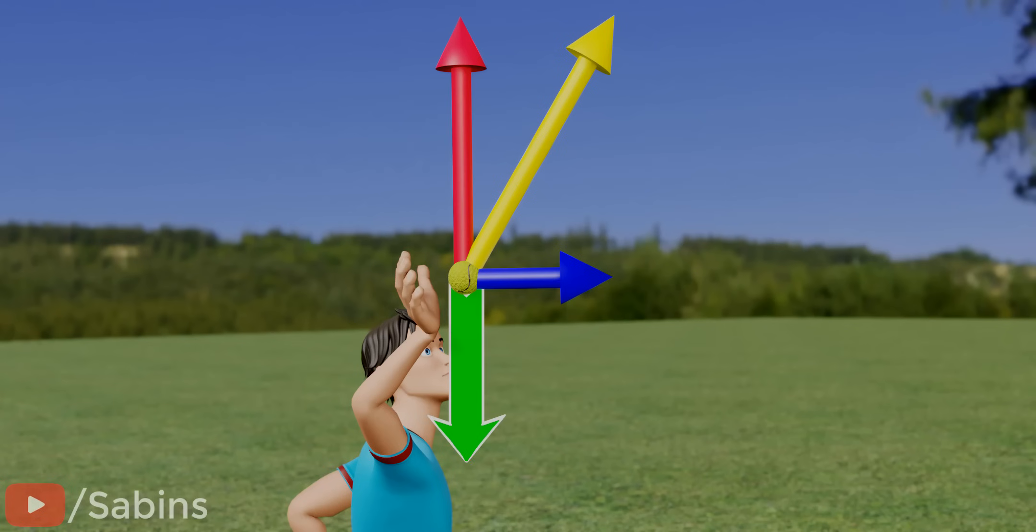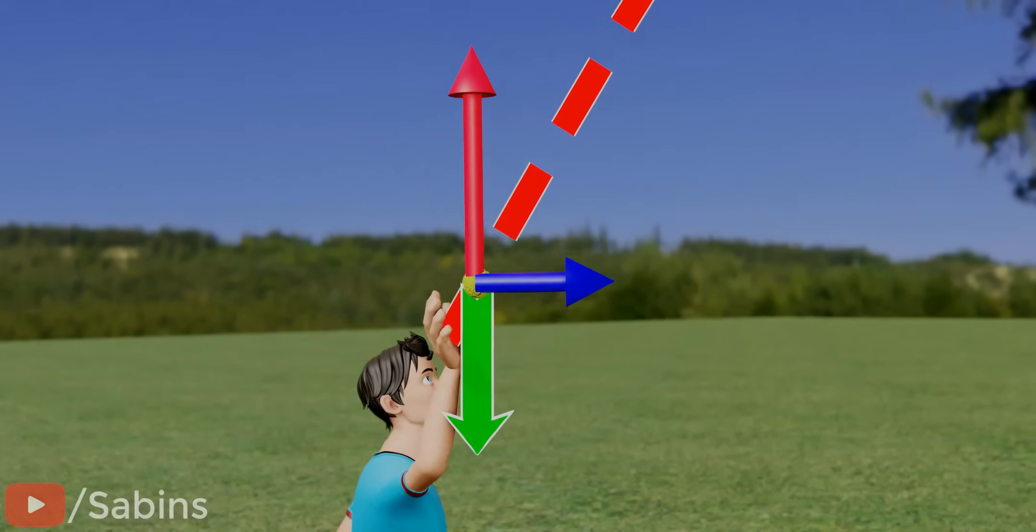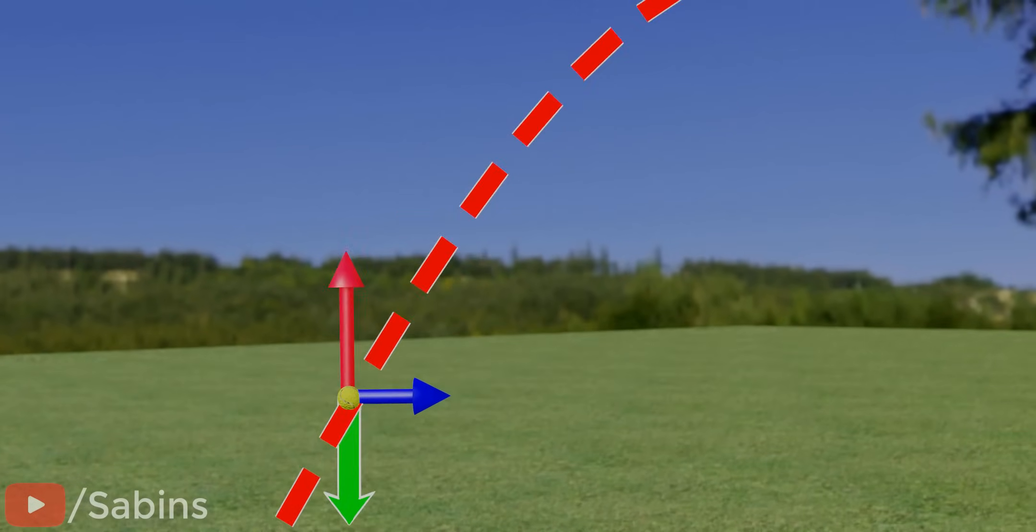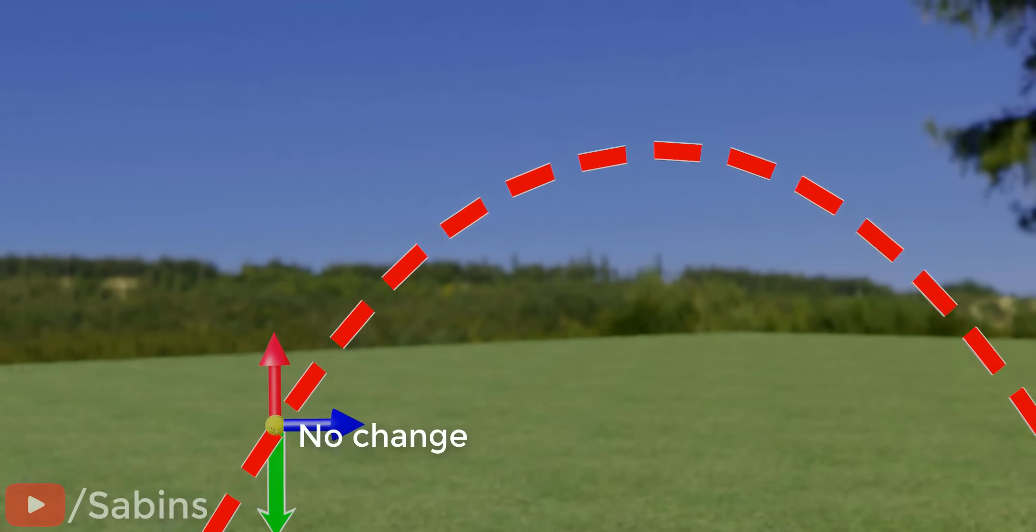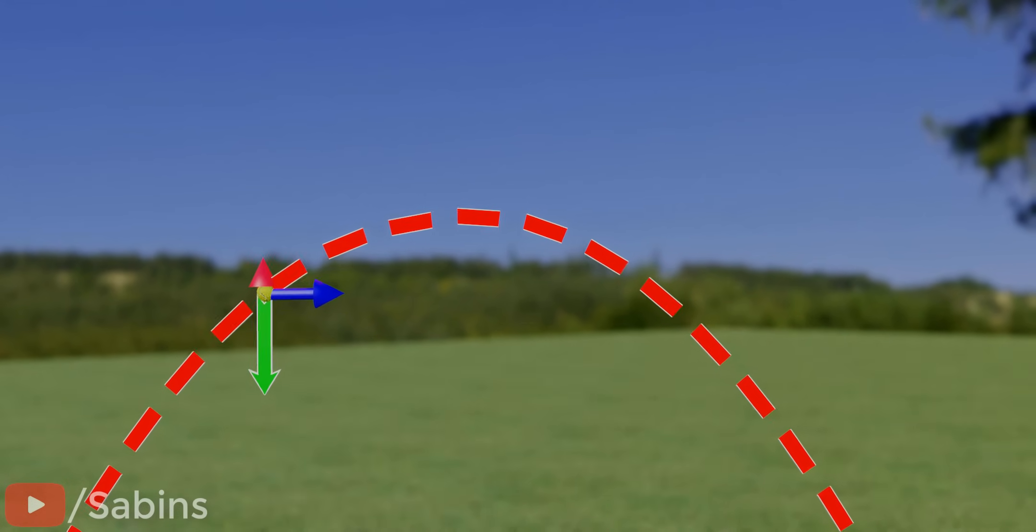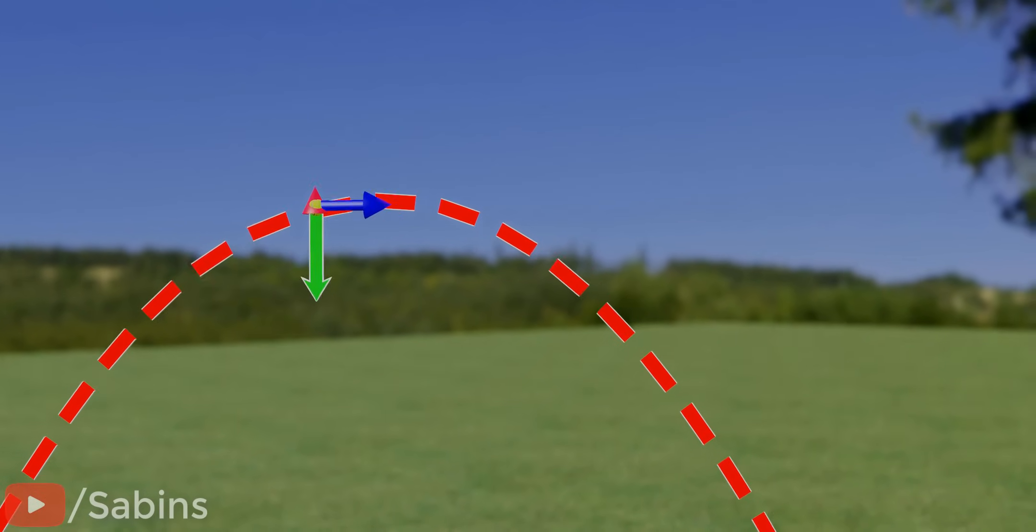The gravitational force always acts vertically. When a force acts on a moving object vertically, the horizontal component of velocity never changes. Only the vertical component of the object's velocity will change due to the vertical force.